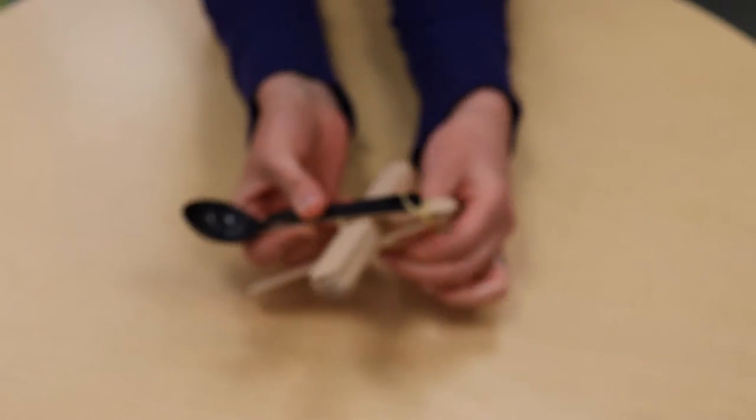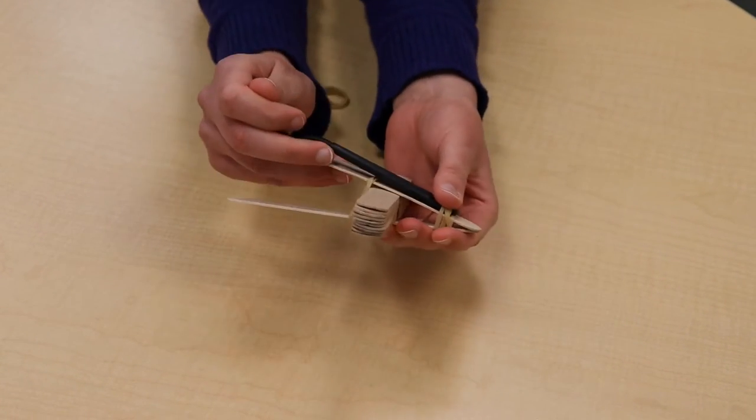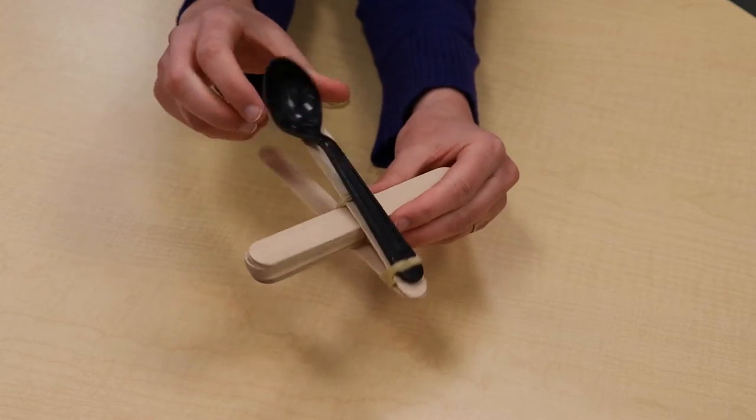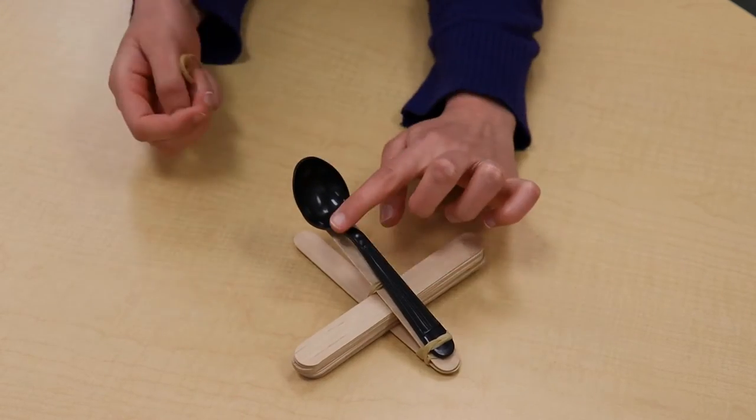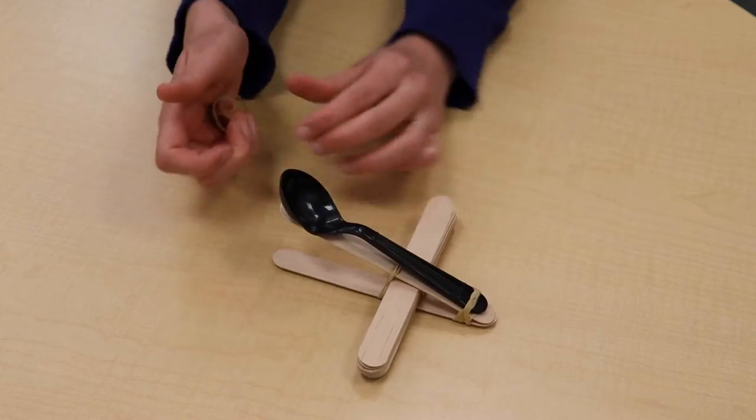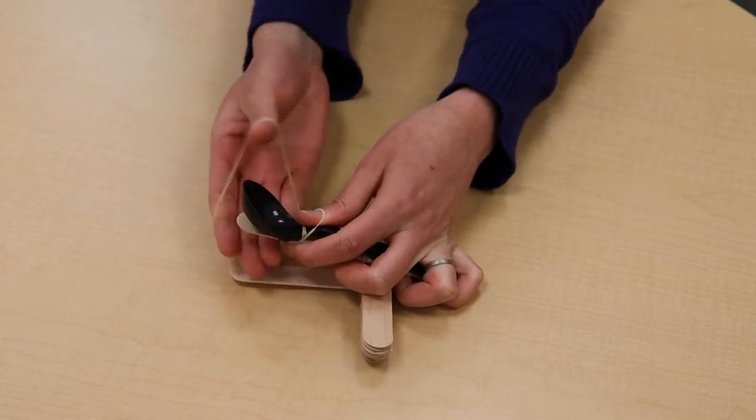You could actually just use the existing rubber band at the bottom and tuck the spoon underneath the rubber band so it's secure there, but we'll want to secure the top as well. So I'll add another rubber band right here across the neck of the spoon. So let me tie that off. And then we will be ready to rock and roll.